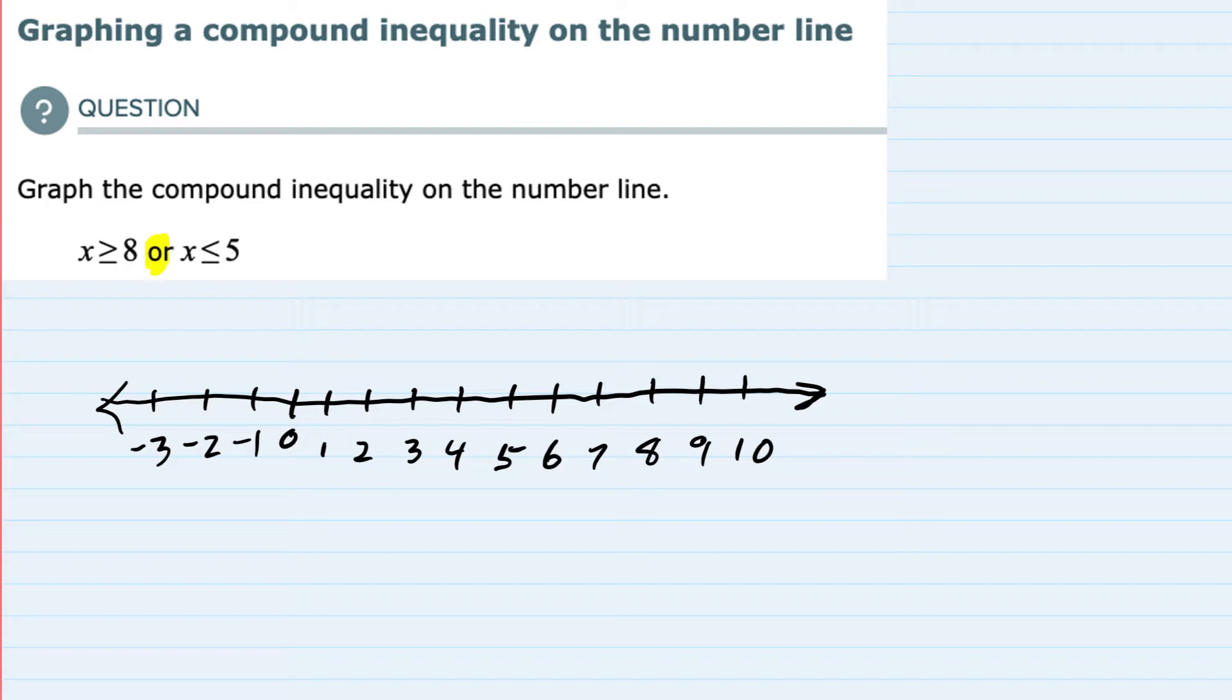What makes this compound is the fact that it's either an OR statement or an AND statement. If it's an OR statement, then once I graph these two lines, the compound is where either of them exists. If this were an AND statement, I would only graph where both exist. In this example, we have an OR statement, so it's going to be either line.